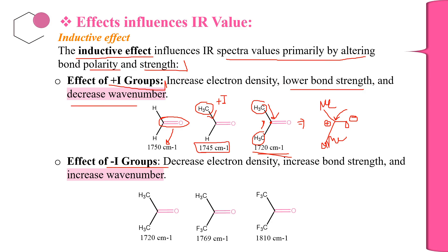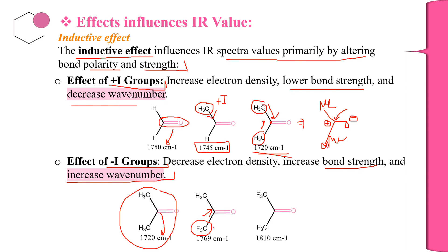The same phenomenon is reversed when −I (minus inductive) groups are present. A −I group increases the electrophilicity of the carbonyl compound, forcing more double bond character, which increases the bond strength and the wavenumber. For example, acetone has a C=O stretching frequency at 1720 cm⁻¹. If one methyl is replaced by CF₃ (a −I group), the wavenumber increases drastically. If both methyl groups are replaced by CF₃, the wavenumber increases even further. This is the typical inductive effect on IR values.